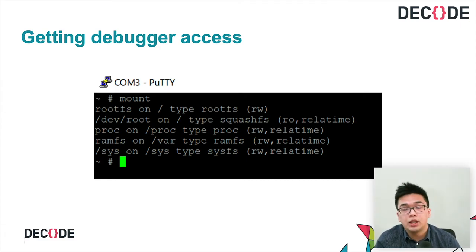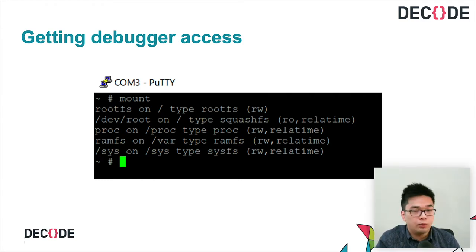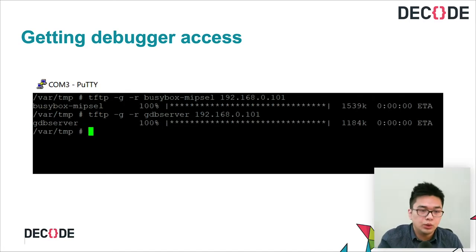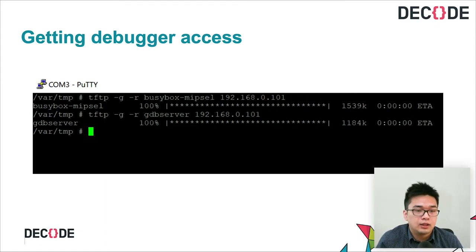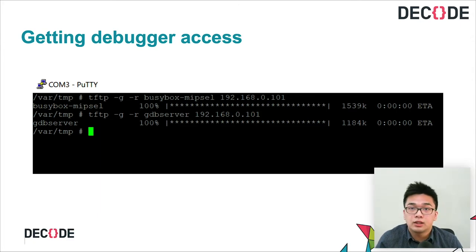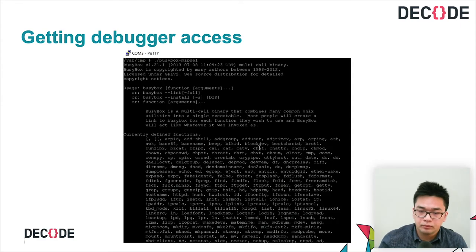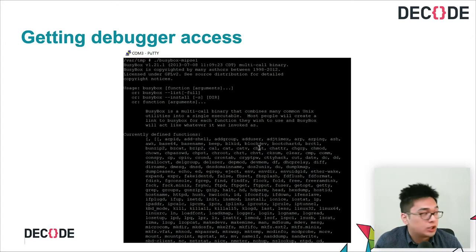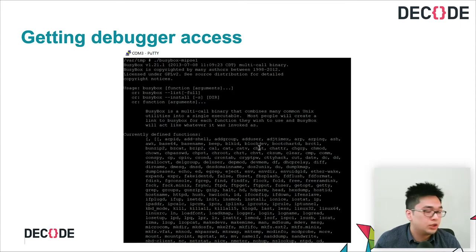To do that, we need to determine a writable location on the device. With the mount command, we see that we can write to the RAM FS. We use a TFTP server to transfer tools onto the device — as you can see, we moved both BusyBox and a GDB server onto the device. With that done, we have many more commands available, and we can also use the precompiled statically compiled GDB server to run a debugger instance.